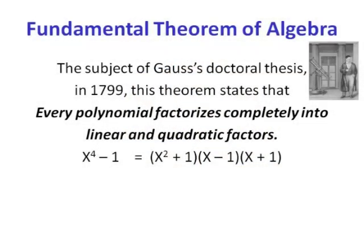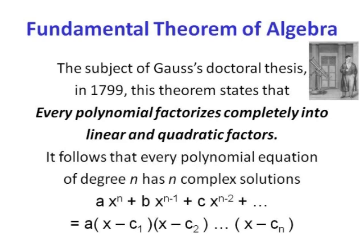This gives us the fundamental theorem of algebra, in the form Gauss proved in his doctoral thesis: every polynomial factorises completely into linear and quadratic factors. For example, x⁴ − 1 = (x−1)(x+1)(x²+1). The solutions are x = 1 (from x−1=0), x = −1 (from x+1=0), and x = ±i (from x²+1=0). Every polynomial equation of degree n has exactly n complex solutions.